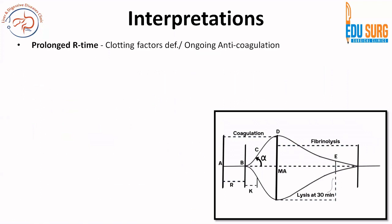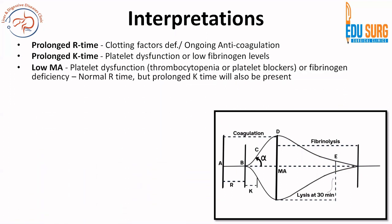We need to interpret these measures. If you have a prolonged R time, since R time is based on clotting factors, you can have a clotting factor deficiency or the patient may be on ongoing anticoagulation — both can affect R time. K time or kinetics depends on platelet and fibrinogen, so platelet dysfunction or low fibrinogen level will give a prolonged K time. A low MA — maximum amplitude — again depends predominantly on platelet and fibrinogen, so platelet dysfunction, platelet blockers, thrombocytopenia, or fibrinogen deficiency will give a normal R time but a prolonged K time and low MA.